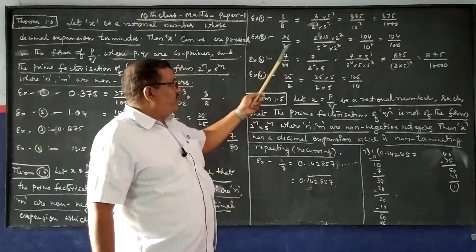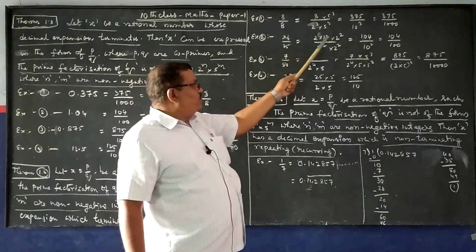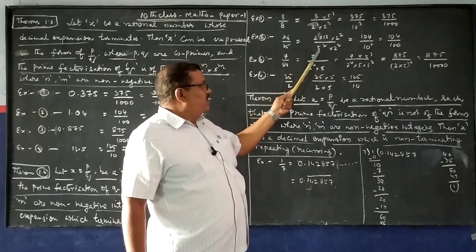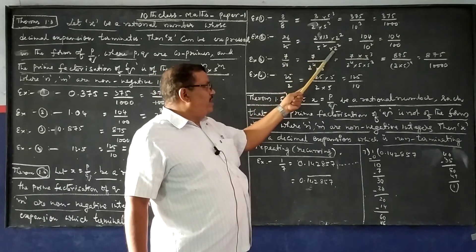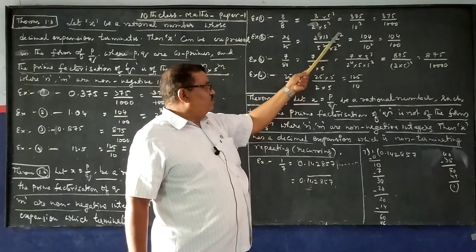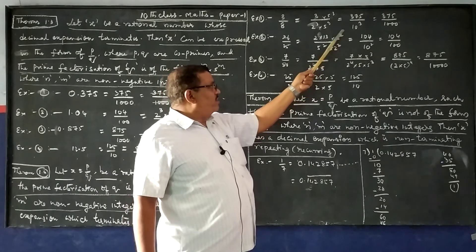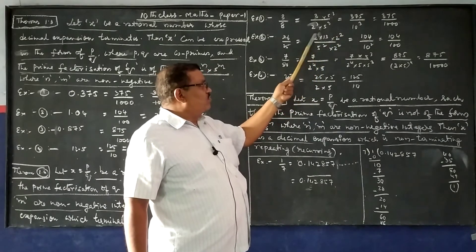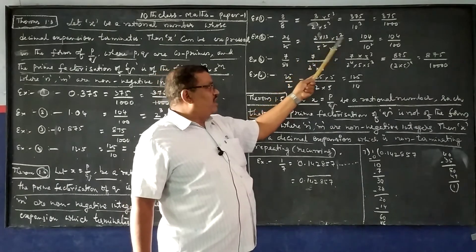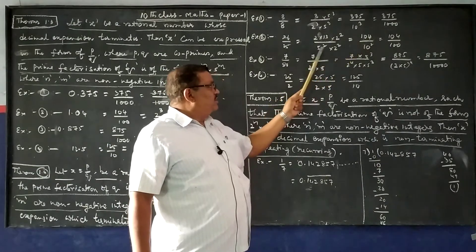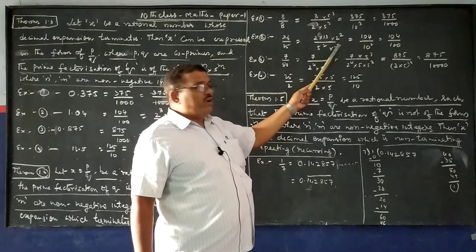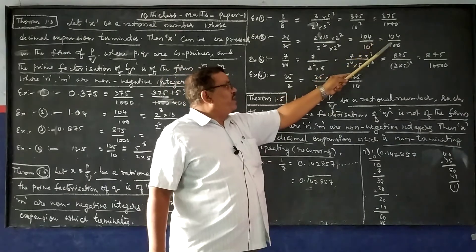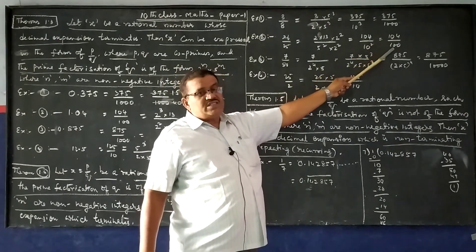Similarly, 26 by 25: 2 × 13 by 5². Multiply numerator and denominator by 2² to get 2² = 4, and 26 × 4 = 104. The denominator is 5² × 2² = 10² = 100. So we get 104 by 100.